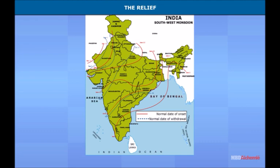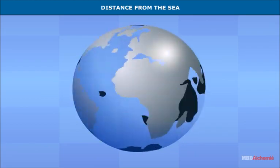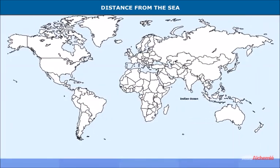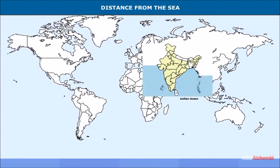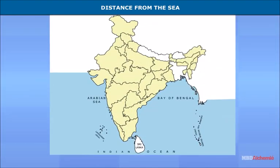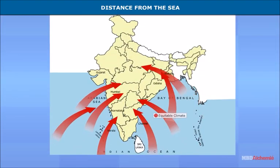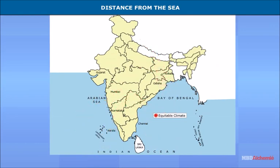India lies at the head of the Indian Ocean. Like peninsular India, the Indian Ocean is also triangular in shape, so winds blowing over the ocean can sweep over almost the entire landmass. The monsoons are essentially oceanic winds or sea breezes on a large scale. Sea coasts such as Chennai, Mumbai, Kolkata, almost the whole of Kerala, parts of Karnataka, Odisha, and Gujarat have equitable climate.